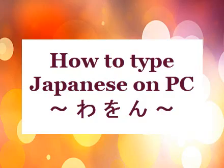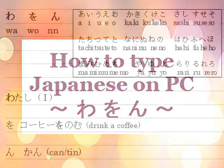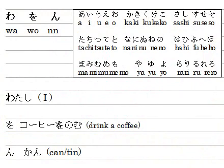みなさん こんにちは、カズエです. How to type Japanese on a PC? Today's lesson is wa, o, and n.